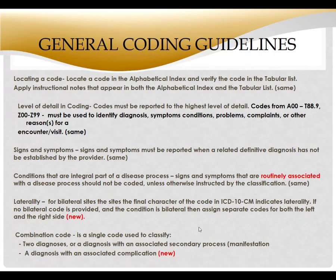Previously with ICD-9 coding, we listed what the patient's complaint was first. Now we list what's actually wrong with the patient — the diagnosis. So if a patient comes in with cough and congestion, we're not going to list cough and congestion first because those are signs and symptoms. We list what the actual diagnosis was. If the doctor diagnosed bronchitis, we list bronchitis first, then the ICD-10 code for cough, then the ICD-10 code for congestion — those are generally Z codes.